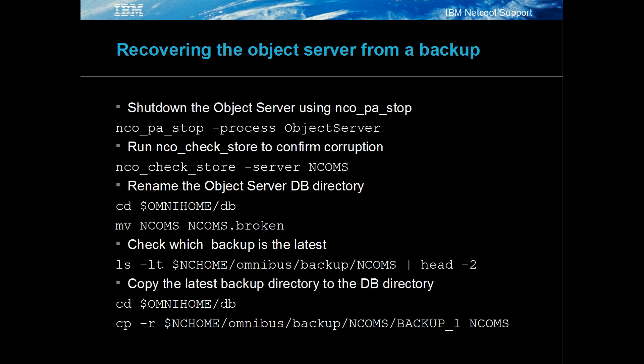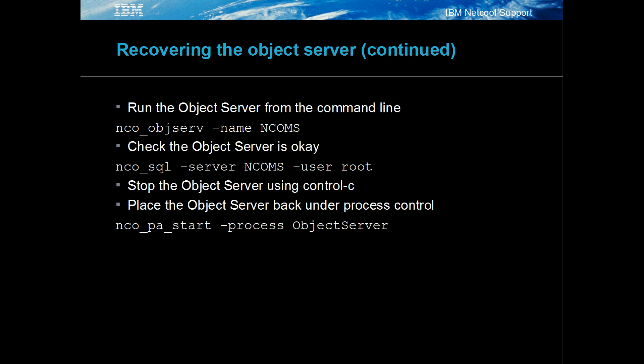To recover an object server using the backup files, first make sure that the object server process is stopped. Check the current object server files to see if they are recoverable using the nco_check_store command. If it is not recoverable, then use the latest backup files. Rename the current object server DB directory and copy the latest backup directory to the object server directory. Run the object server from the command line and confirm that the system works as expected. Once confirmed that the backup files are okay and the object server behaves normally, stop the object server using Ctrl-C and run the object server under process control as normal.